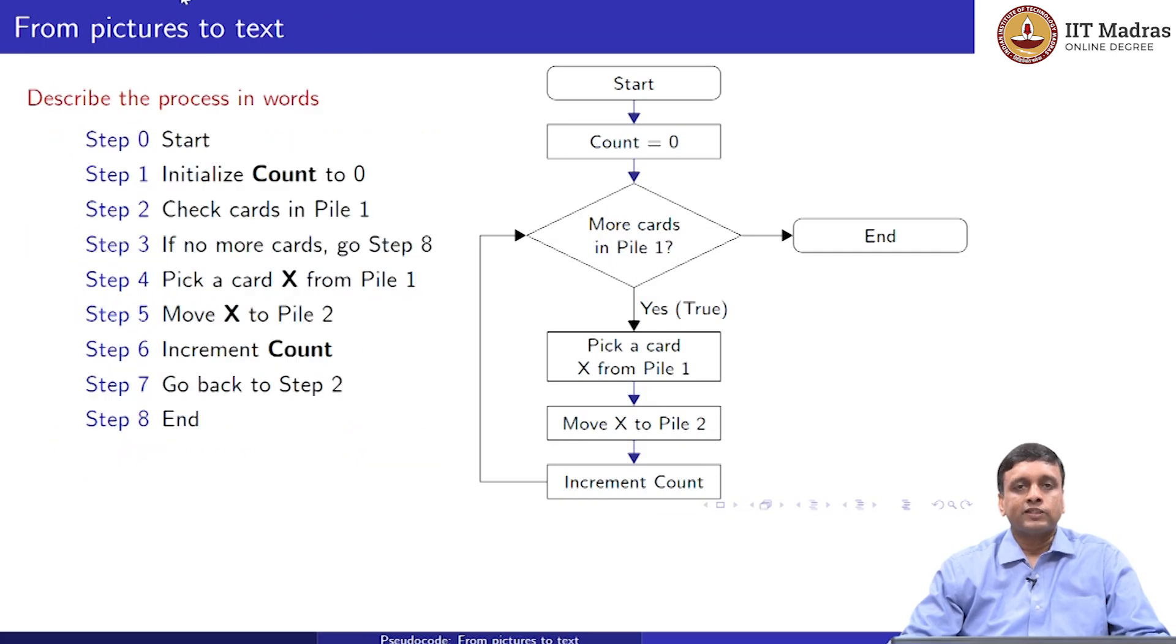So instead of pictures, we will move to text. So here is a very naive way of writing down the same procedure as text. So we number the steps starting from the initial step zero, which is just to start the procedure. So we just write down one step for every box more or less. And the sequence of steps follows the arrows that are in the sequence. So we have step zero, which is to start. Step one, where we initialize the count to zero. Step two is our decision box. So we have to check the cards in pile one. And now we have to take a decision. So now we have to vary the flow.